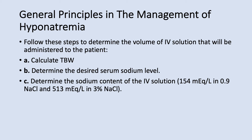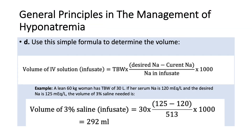We use a simple formula to determine the volume of IV solution to infuse. The volume equals total body water multiplied by the desired sodium minus the current sodium in the numerator, divided by the sodium content of the solution (the infusate), times 1,000 — so we get the volume in milliliters, not per liter.